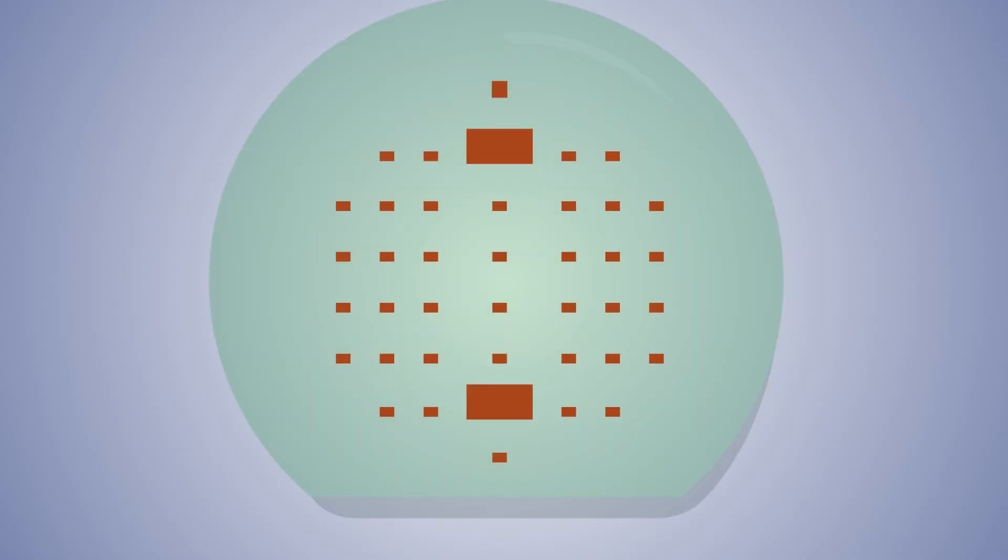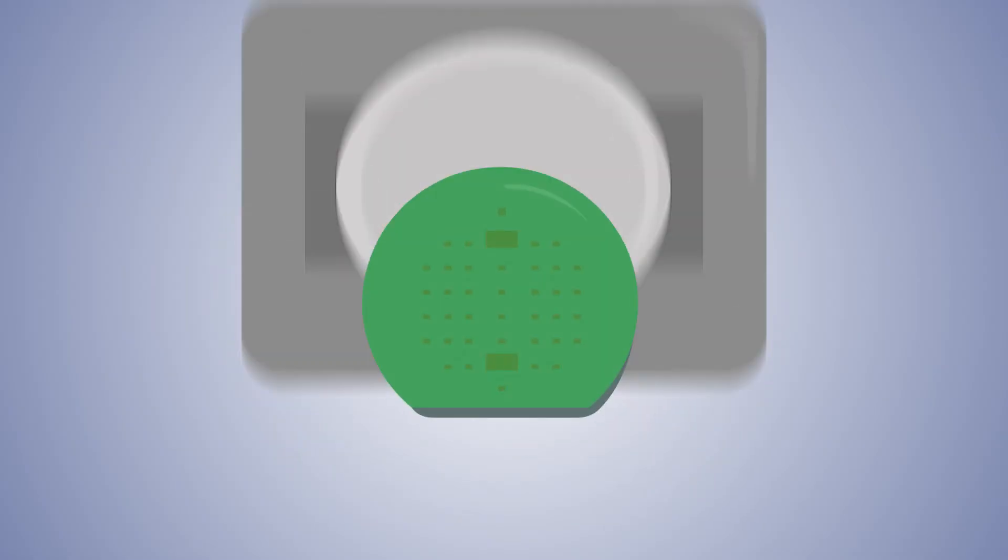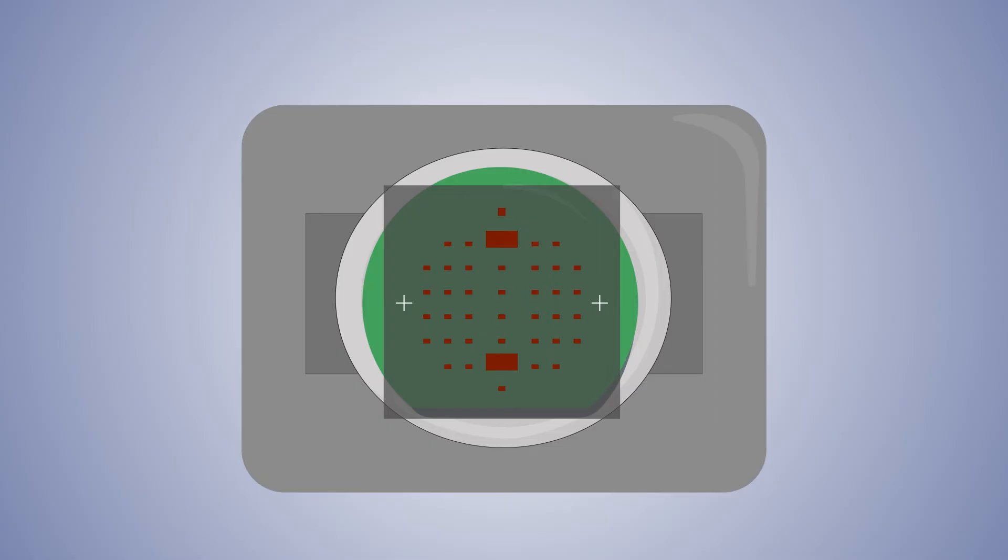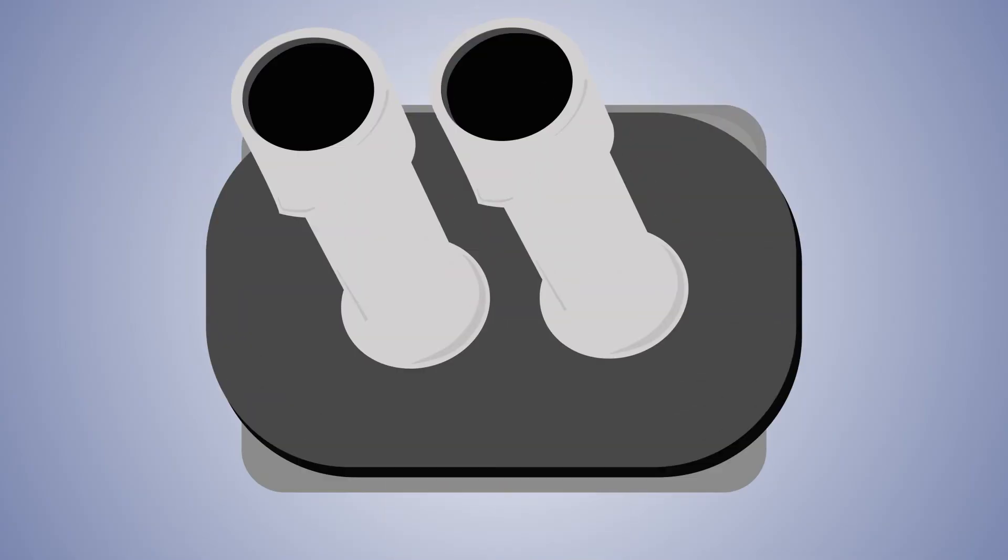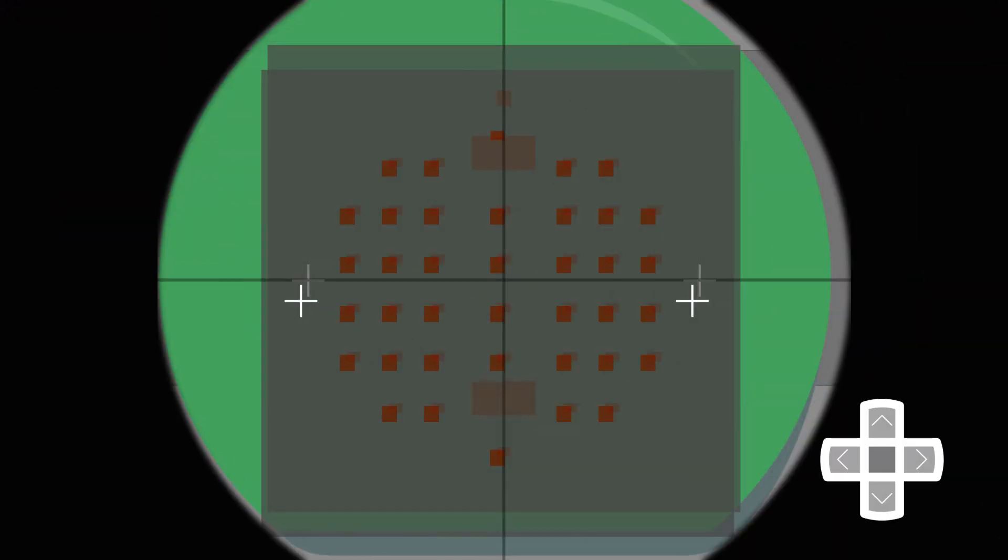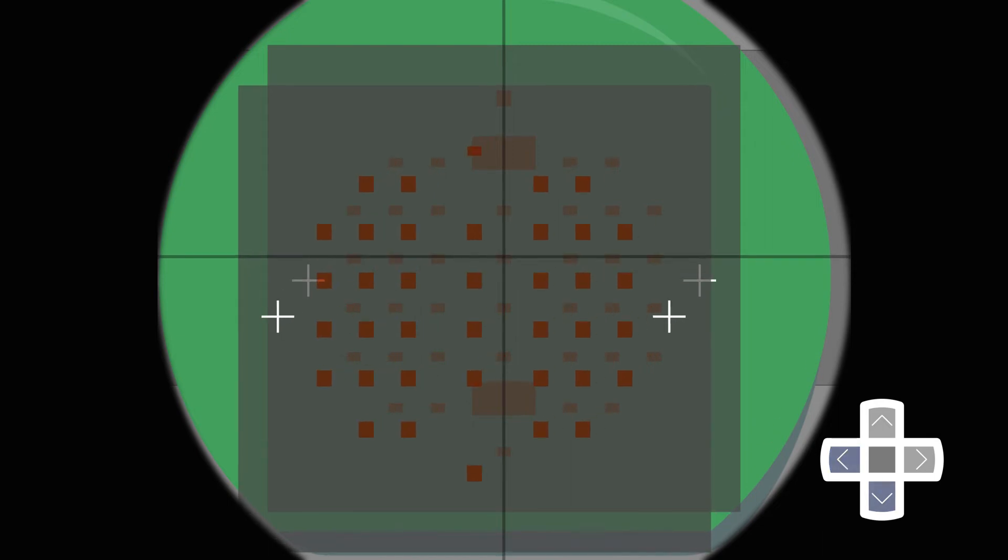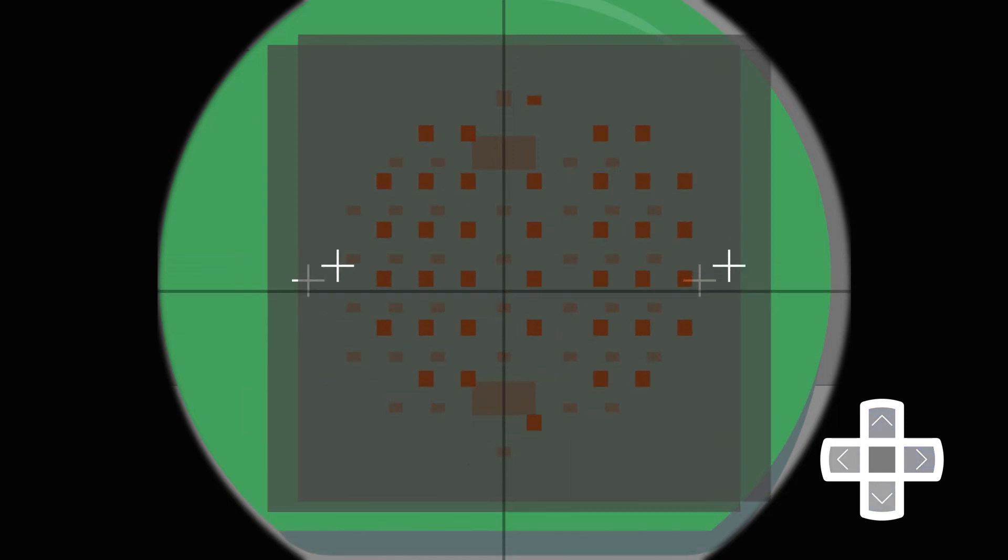It is also possible that the wafer we are processing may not be blank, meaning it may have been processed in previous manufacturing processes. In this case, before exposing another area, the mask must be aligned with the equipment to avoid any overlapping error.